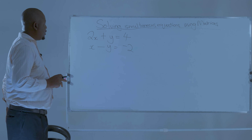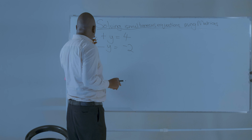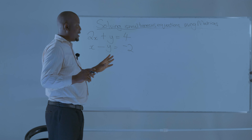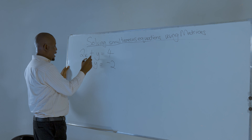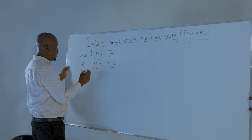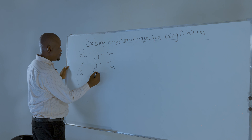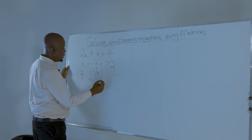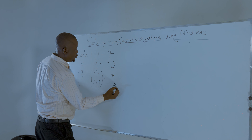Using the matrices method, you're going to create a 2 by 2 matrix using the coefficients of X and Y. So this gives us 2, 1, 1, negative 1, then we have XY, and this is equal to 4 and negative 2.